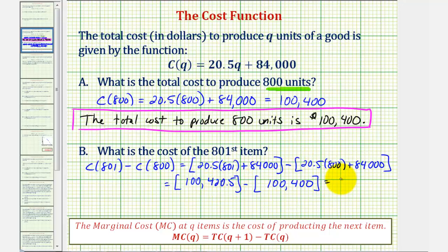Giving us a difference of 20.5. Which means the cost of the 801st item is $20.50.